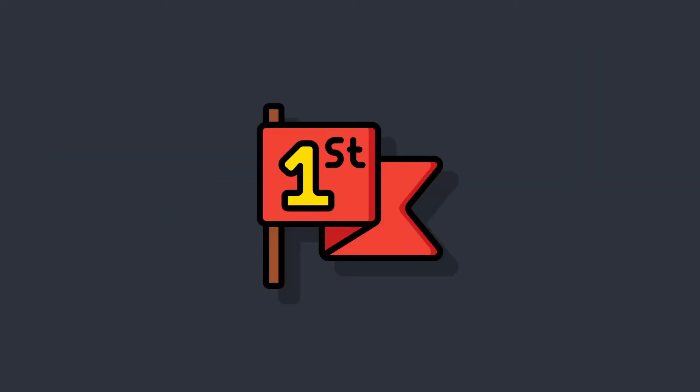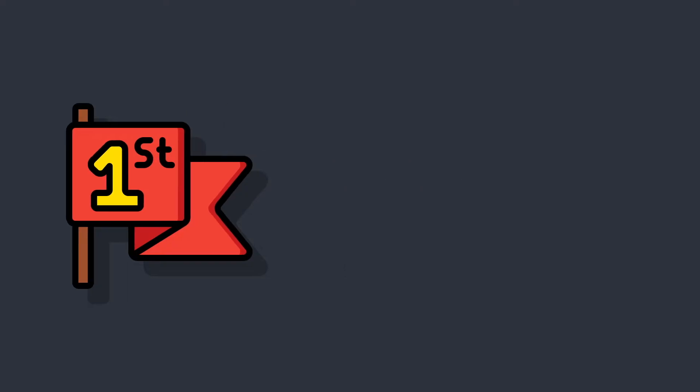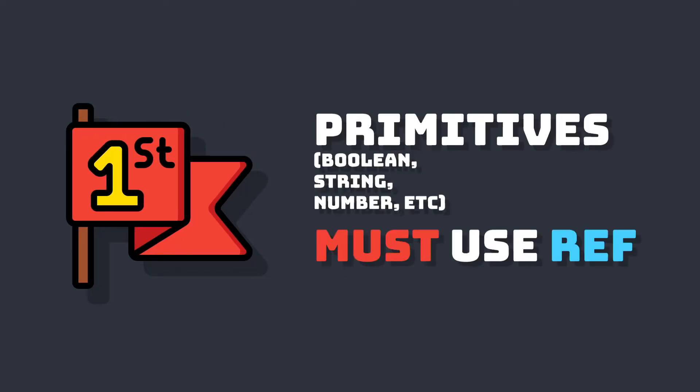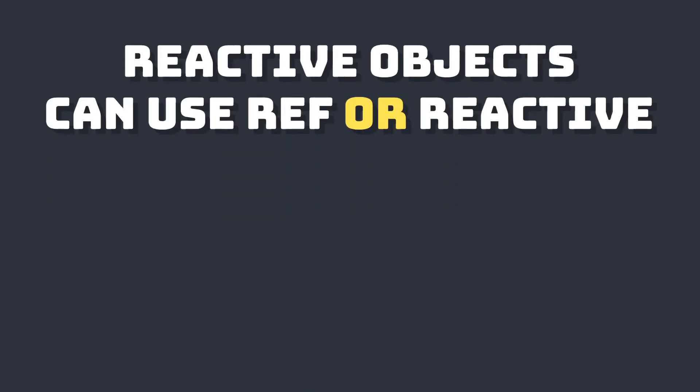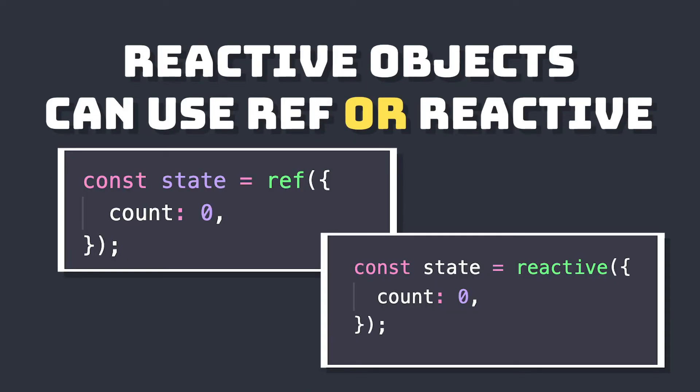First off, it is true that if we want to create a reactive value with a primitive, we have to use ref. But if we want to create a reactive object, we can use either ref or reactive. So to understand what's happening, let's take a closer look at each one of these methods.